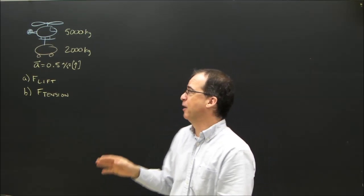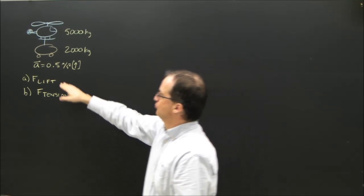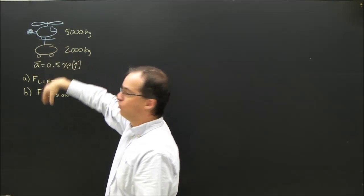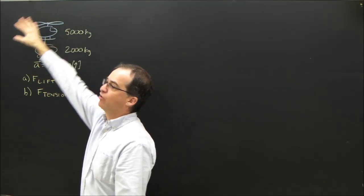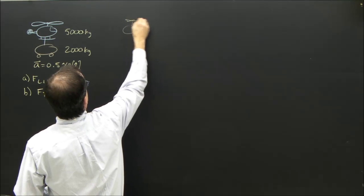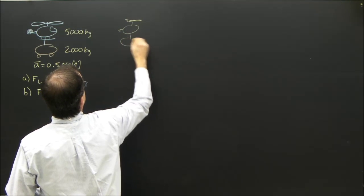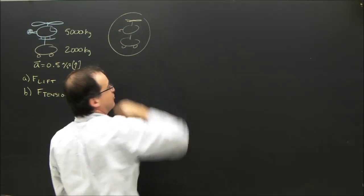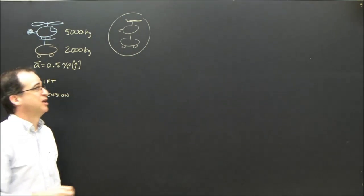Because F net always equals MA. Okay, so what am I looking for? The lift of the whole system. So I need to draw the whole system. So I'm going to draw the helicopter and the car. I'm going to say everything in there, F net equals MA.